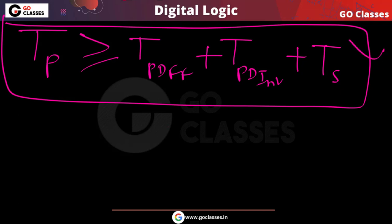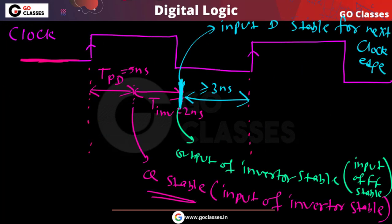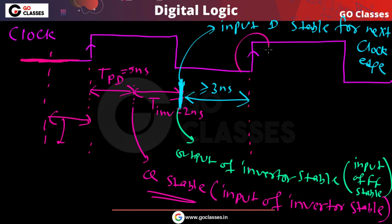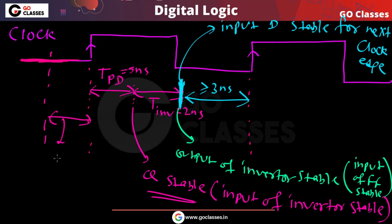You can notice that hold time does not appear in this equation. Hold time does not affect the clock period. The reason is that the hold time and the propagation delay of the flip-flop overlap each other. Because they overlap, hold time does not affect this time period.